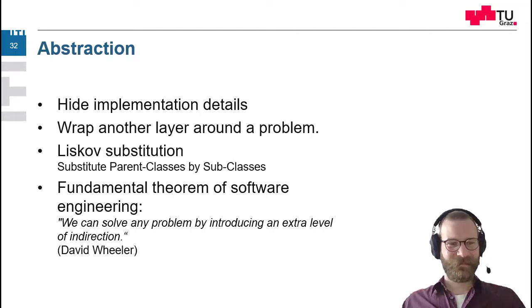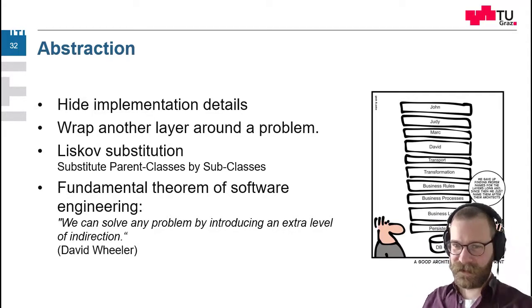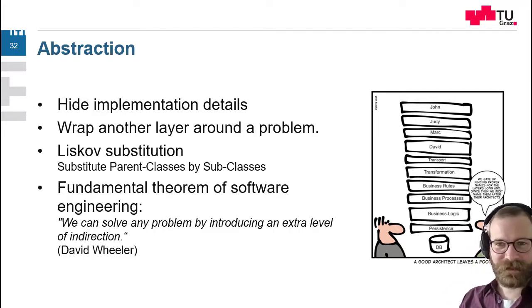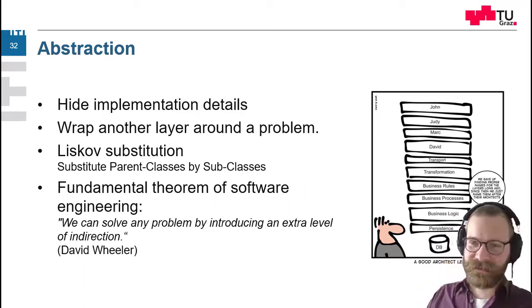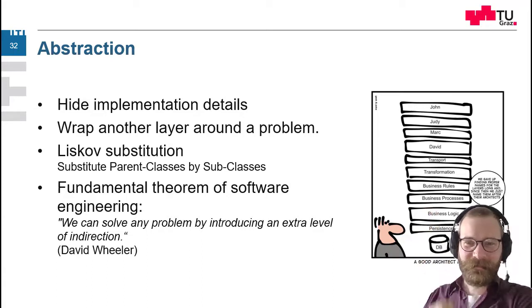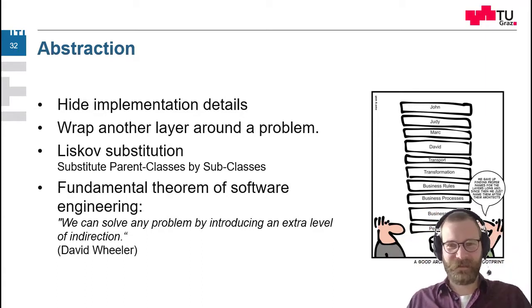And there is this fundamental theorem of software engineering. We can solve any problem by introducing an extra level of indirection by David Wheeler. So this abstraction principle is important because it makes a single problem more graspable. But as you see in this comic of software architecture, it can be that you have so many layers of abstraction that it gets even more complicated. So this is something you should avoid. And sometimes layers don't even have right names anymore. They just name it after the developer who introduced this layer.